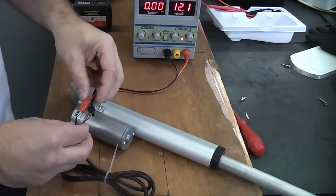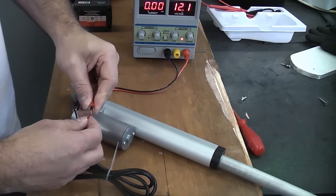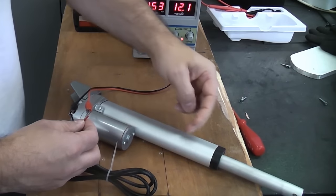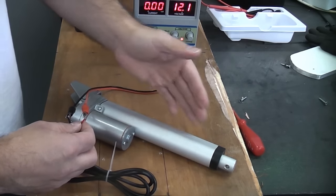If we now reverse polarity at this end, that will cause the actuator to retract again until it hits the limit switch at the back and then that will stop it.